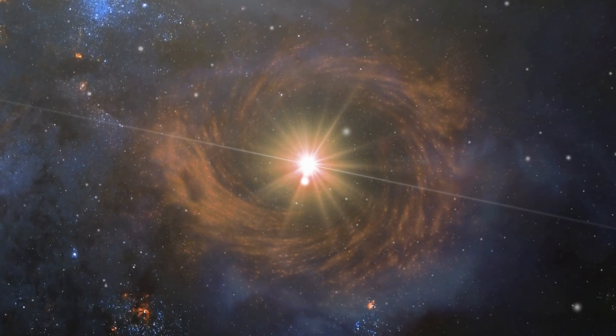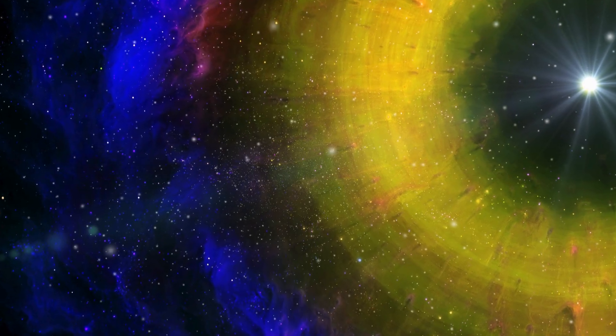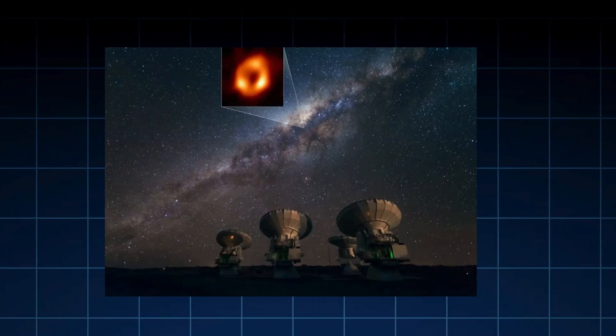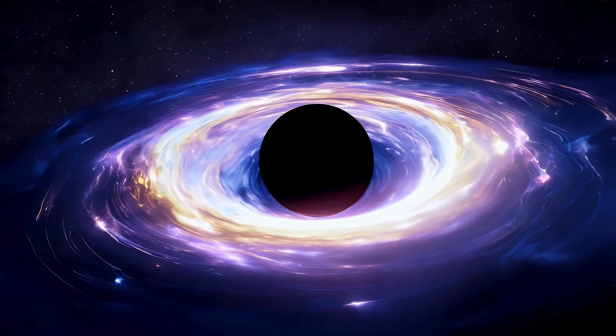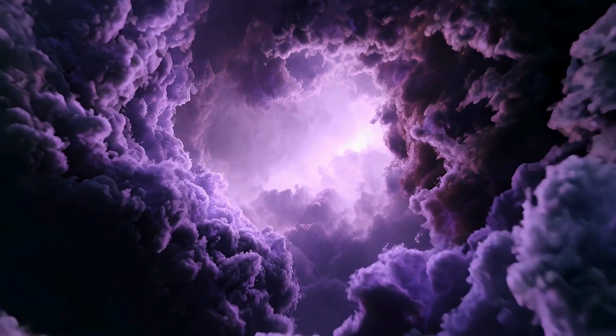Black holes in binary systems also tug on companion stars, causing them to wobble in ways we can measure. And then there's the Event Horizon Telescope, which in 2019 gave us the first-ever image of a black hole's shadow in the galaxy M87—a glowing ring around a dark void, proving these monsters are real.